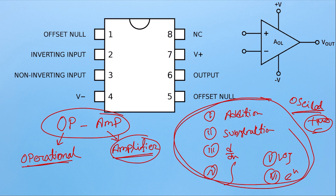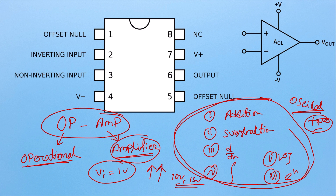Op amp is the operational amplifier, so it can do all of these operations. And why amplifier? Because op amp can do amplification also — like if you give op amp Vi = 1 volt, then op amp can amplify this voltage and can give you 10 to 15 volts. We will see the individual operations as well as the amplifications.